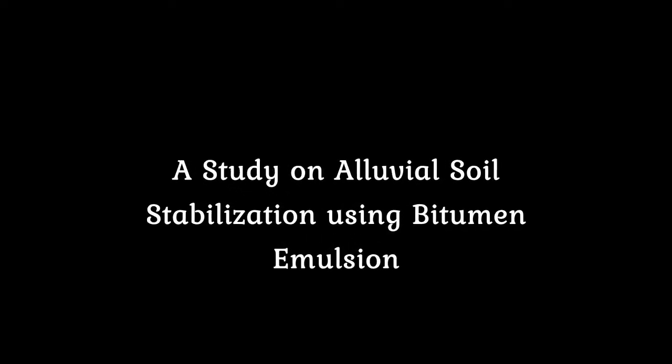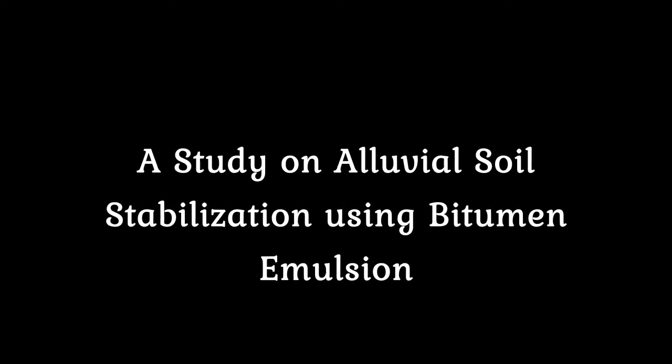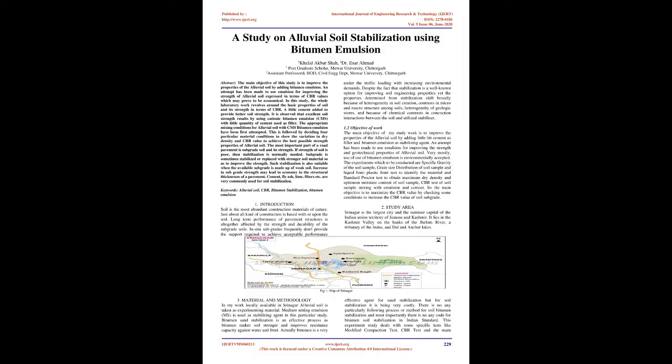A Study on Alluvial Soil Stabilization Using Bitumen Emulsion. Abstract: The main objective of this study is to improve the properties of the alluvial soil by adding bitumen emulsion. An attempt has been made to use emulsion for improving the strength of alluvial soil, expressed in terms of CBR values, which may prove to be economical.